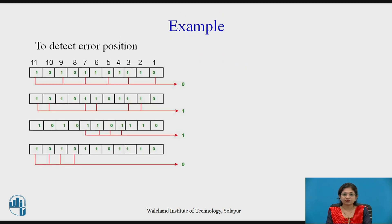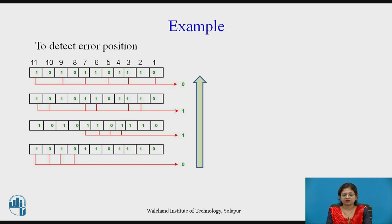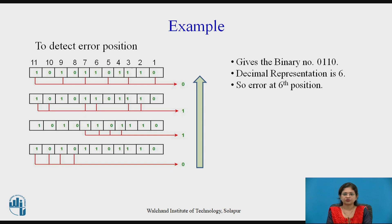The received data is 1, 0, 1, 0, 1, 1, 1, 0 instead of the original. To find the error, recalculate r1, r2, r4, and r8 from the received frame. Counting 1s at the respective positions gives: R1 = 0 (even), R2 = 1 (odd), R4 = 1 (odd), R8 = 0 (even), giving the binary number 0110. The decimal representation of 0110 is 6, so the error is at the 6th position.